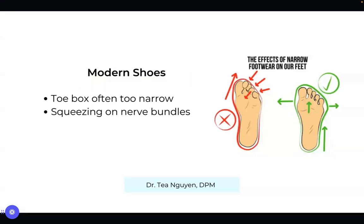Morton's neuroma is usually attributed to our shoes. Modern day shoes have toe boxes that are too narrow, which causes the toes to scrunch together and squeeze on the nerve bundle. The easiest treatment is making sure the shoe fits your foot and allows your toes to move freely, since all of our feet are very different.